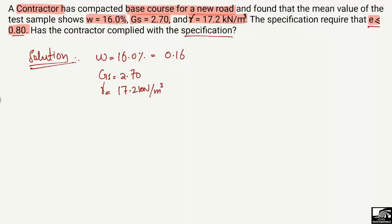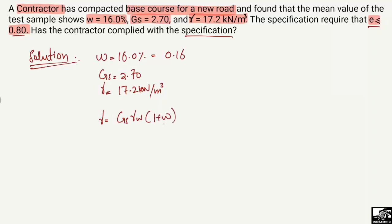Now we look for a formula to find the void ratio. One useful formula is: gamma equals Gs times gamma_w times (1 + w) divided by (1 + e), where gamma is the unit weight of the soil, Gs is specific gravity, gamma_w is the unit weight of water, w is water content, and e is the void ratio.